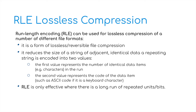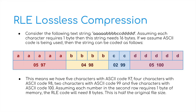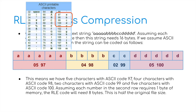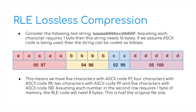RLE is only effective where there is a long run of repeating units. For example, take a string of A's, B's, C's and D's — 16 characters total. Assuming each character requires one byte, the string needs 16 bytes. Using ASCII code, the string can be encoded as: five lots of 97 (A), four lots of 98 (B), two lots of 99 (C), and five lots of 100 (D). Assuming each number in the encoded row also requires one byte, the RLE code needs only 8 bytes — a 50% reduction in file size.